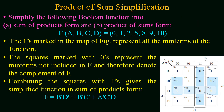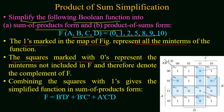In the given example, simplify the given boolean function into sum of product form and the product of sum form. The function consists of four variables and the minterms lie at 0, 1, 2, 5, 8, 9, and 10. First of all, we will make a map of four variables which will have 16 squares and will mark all the given minterms with one. All the remaining squares other than minterms will be marked with zero. Making a group of all adjacent squares marked with ones gives us the simplified function in the sum of product form.